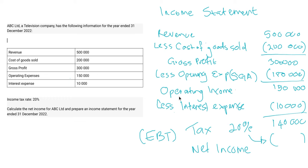It's basically twenty percent of your income after you've deducted all your expenses. So twenty percent of $140,000 gives us $28,000 — that's the tax that we are going to pay to the government, or the receiver of revenue. So what is your total net income after tax? It's going to be your $140,000 minus your $28,000.